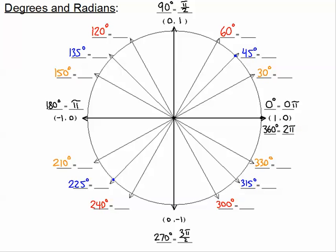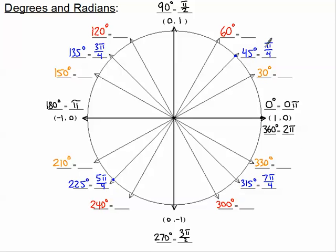Next I'm going to do the 45-degree angles in blue, which are the pi over four angles. This angle is exactly halfway between zero pi and pi over two, so that makes sense that it's pi over four — one fourth of a pi. I'm going to continue to count by fourths: one pi over four, then two pi over four which reduces, then three pi over four, then four pi over four which reduces, then five pi over four, then six pi over four which reduces, then seven pi over four, and finally eight pi over four which reduces. So our blue pi over fours are the odd numerators: one pi over four, three pi over four, five pi over four, and seven pi over four.